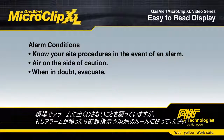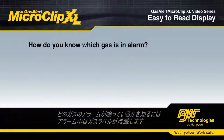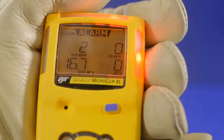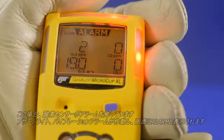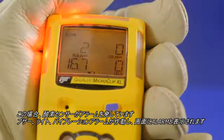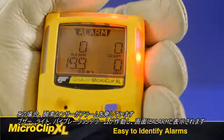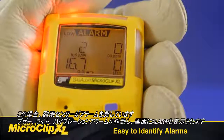Hopefully, you never encounter an alarm. In the event you do, follow your evacuation protocols and your site procedures. How do you know which gas is in an alarm condition? The gas below the reading will flash. In this case, the oxygen sensor is in alarm. In addition to the audible, visual, and vibrating alarm, alarm will flash at the top of the screen.